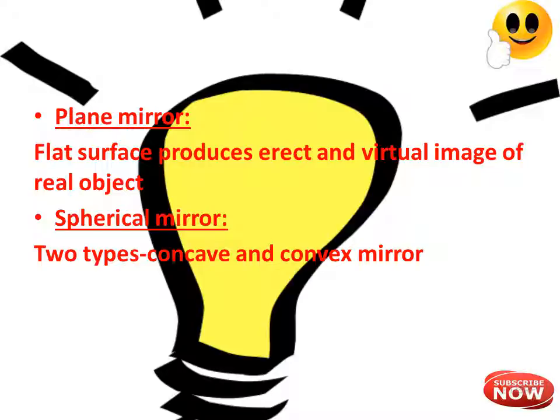In a concave mirror, its outer surface is polished, and in the case of a convex mirror, its inner surface is polished. A spherical mirror is represented by drawing its section. The center is called the pole, and the center of curvature is the center of the sphere of which the mirror is a part. The focal point F is the point where parallel light rays are focused, and it is located at half the distance from the mirror to the center of curvature.